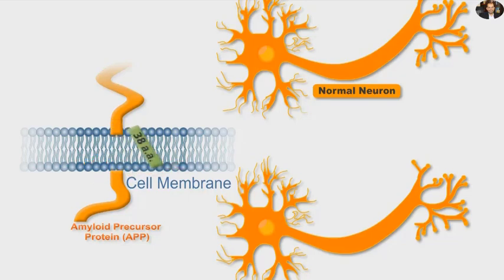This degradation process produces short fragments of a 38 amino acid long peptide. The resulting 38 peptides are easily metabolized and eliminated from the body without any harmful effects. Similar situations occur if the new fragments produced are 40 amino acids long.